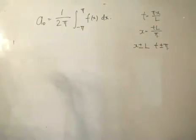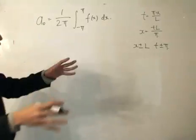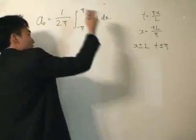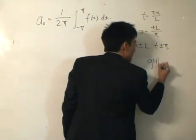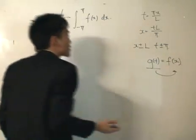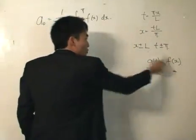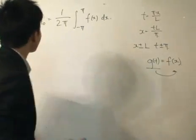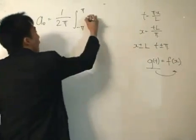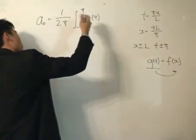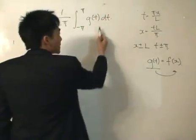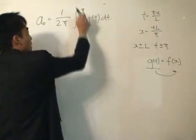That is the change of variable. We define a new variable t, and we translate the function while changing the limits from minus pi to pi to minus l to l. We define another function g(t) such that g(t) equals f(x). What we're going to do is go from g(t) to f(x), so the limits of x become minus l to l. The first coefficient a₀ is then 1 over 2π integrating from minus pi to pi of g(t) with respect to t, since t runs from minus pi to pi.